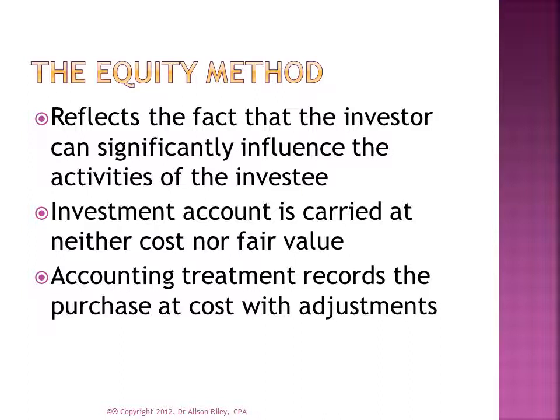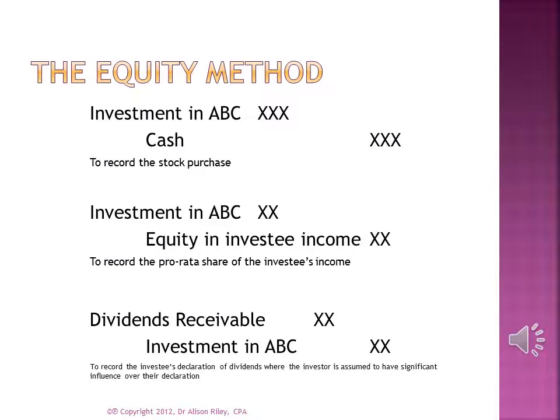The investment is carried on the investor's books at cost with certain adjustments as described on the next slide. The first journal entry illustrates the investor's purchase of common stock for cash, recorded at cost — the same as under the cost method. Because the investing company is assumed to have significant influence over the investee, a reportable event occurs when the investee reports net income. Specifically, the investor makes a journal entry recognizing its share of the income of the investee, increasing the carrying value of the investment account and crediting a revenue account.